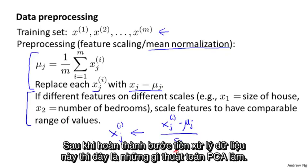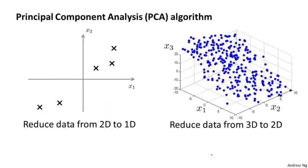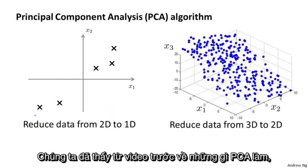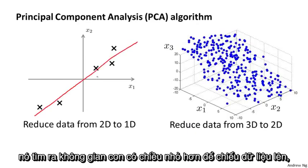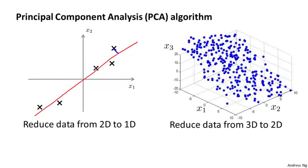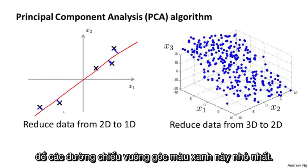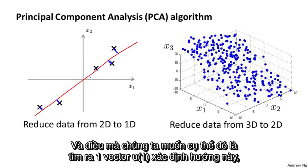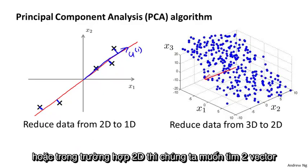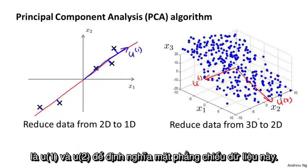Having done this data preprocessing, here's what the PCA algorithm does. PCA tries to find a lower dimensional subspace onto which to project the data, so as to minimize the squared projection errors — the sum of the squared lengths of those blue line segments. Specifically, we want to find a vector u1 which specifies that direction, or in the 2D case, find two vectors u1 and u2 to define the surface onto which to project our data.